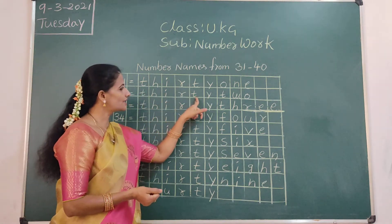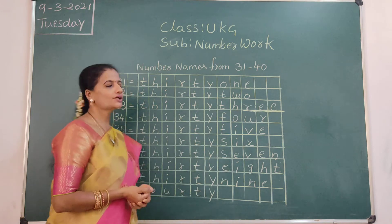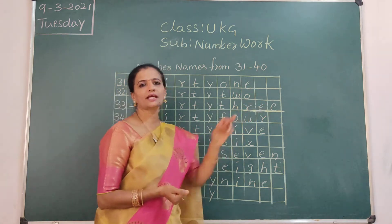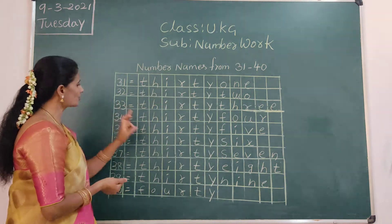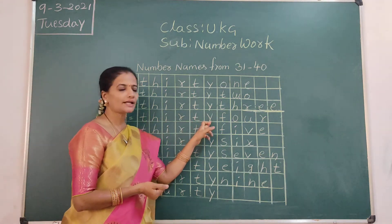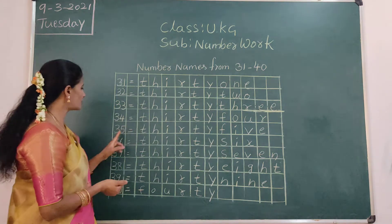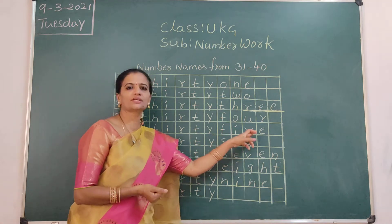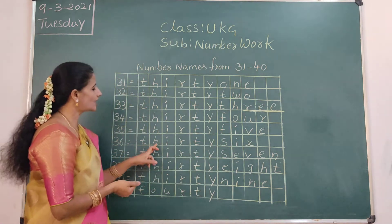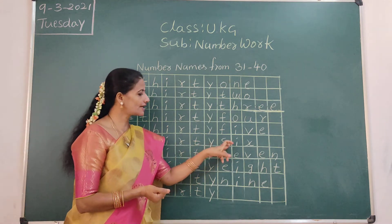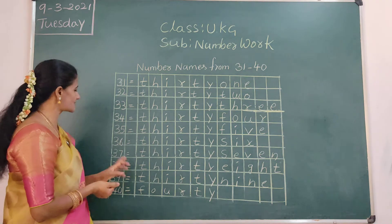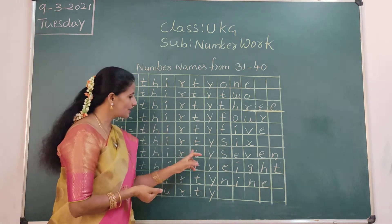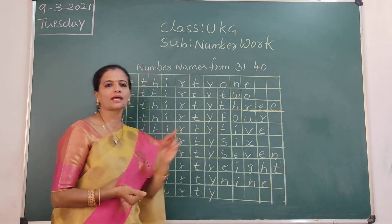Review: 31 — T-H-I-R-T-Y-O-N-E. 32 — T-H-I-R-T-Y-T-W-O. 33 — T-H-I-R-T-Y-T-H-R-E-E. 34 — T-H-I-R-T-Y-F-O-U-R. 35 — T-H-I-R-T-Y-F-I-V-E. 36 — T-H-I-R-T-Y-S-I-X. 37 — T-H-I-R-T-Y-S-E-V-E-N.